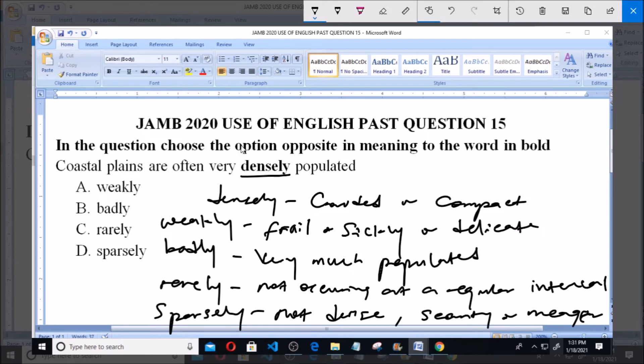Now I am looking at the question. The question says coastal plains are often very densely populated, that is very populated, compact, crowded. And the opposite to this word from this option here is sparsely, that represents scanty and not dense. So the answer to this question is option D, which is sparsely populated, that is not very populated.